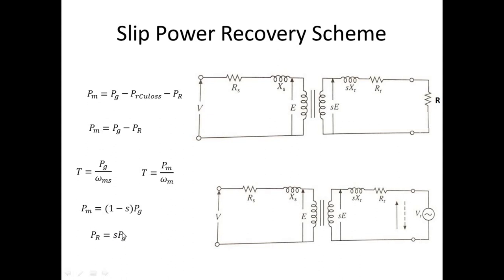In rotor resistance control, this slip power s × Pg was wasted. In the slip power recovery scheme, we recover that power — hence the name. Since Pr is always positive, speed control is below rated speed. However, if we reverse the polarity of the injected voltage source, Pm can exceed Pg, allowing speed control above synchronous speed. This recovered power is utilized only in slip ring motors.